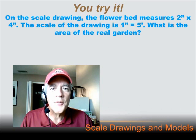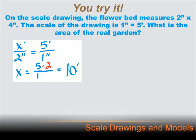Try this one. Hit the pause button, do the problem, and then hit your forward key. We've got a scale drawing of a flower bed. The scale drawing measures 2 inches by 4 inches. And they tell us that the scale of the drawing is 1 inch equals 5 feet. What's the area of the real garden? We know that to get the area, we multiply the length by the height, or the width by the height. But I've got to convert both that width and that height by this scale factor to turn them into feet because I want the area of the real garden. Let's do that one at a time. Let's start with the 2 inches.